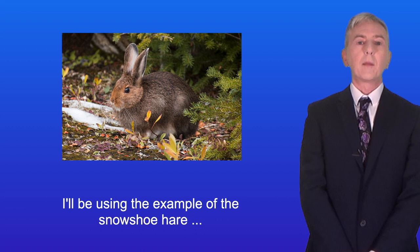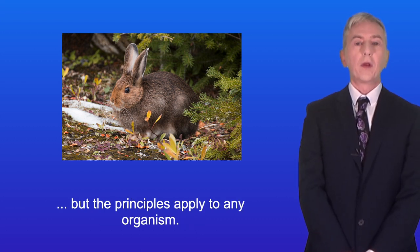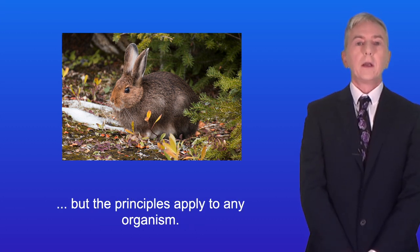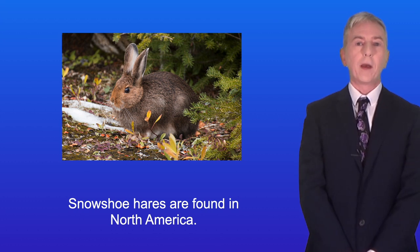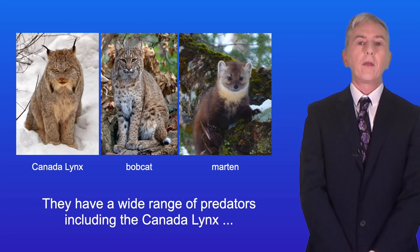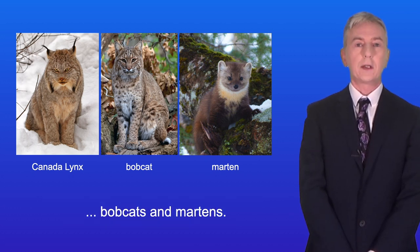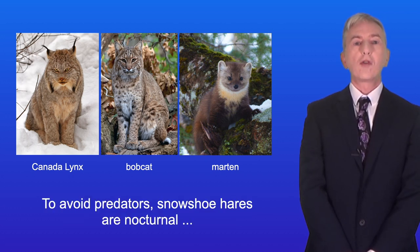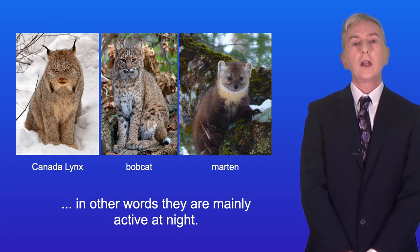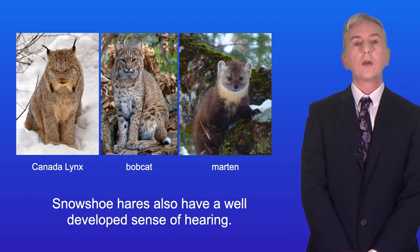I'll be using the example of the snowshoe hare, but the principles apply to any organism. Snowshoe hares are found in North America, and they have a wide range of predators, including the Canada lynx, bobcats and martens. To avoid predators, snowshoe hares are nocturnal — in other words, they're mainly active at night. Snowshoe hares also have a well-developed sense of hearing.